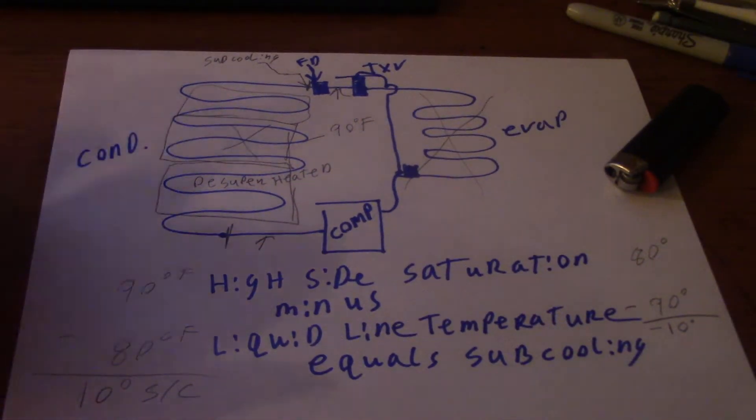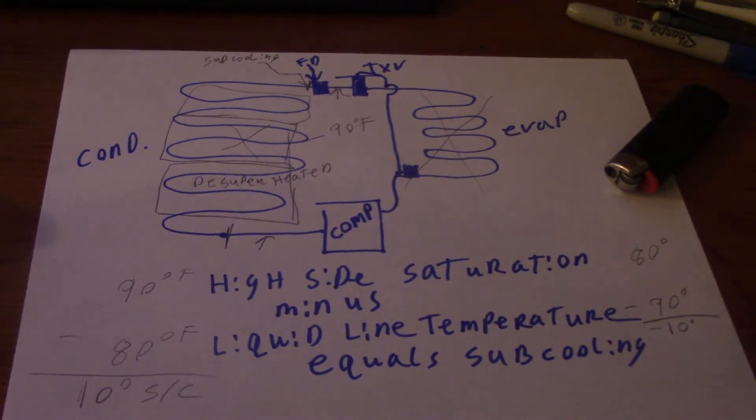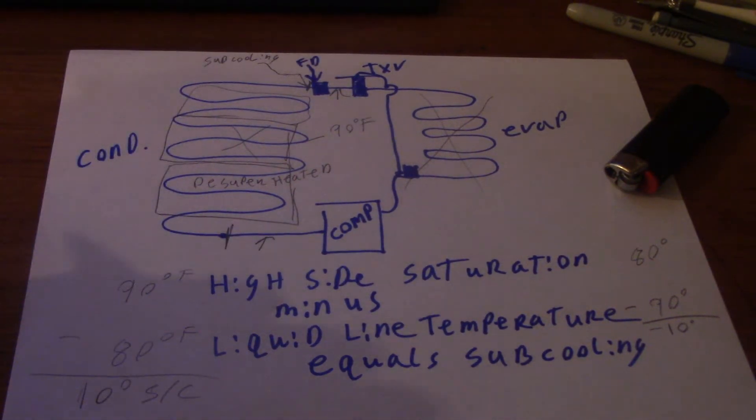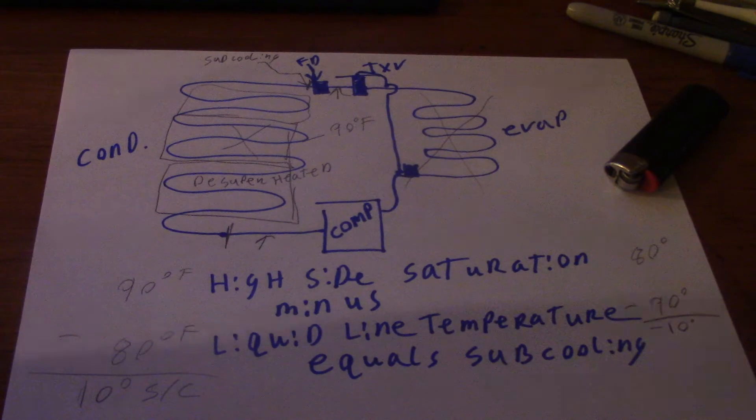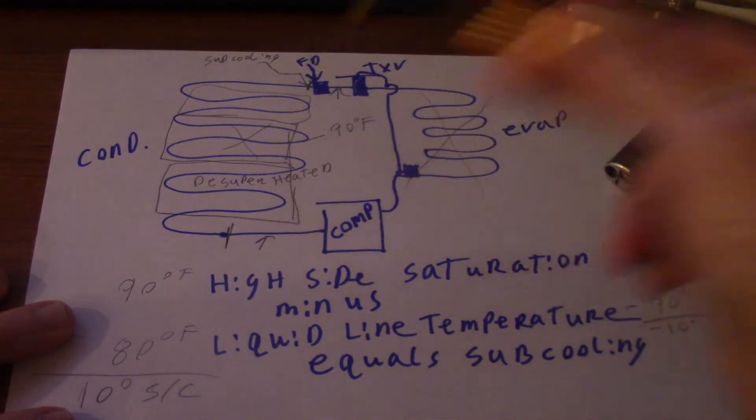For TXV, you charge the system by subcooling. You can't charge it by superheat because a TXV maintains superheat, so you have to charge by subcooling. Your fixed orifice metering devices, you charge by superheat, but you still check the subcooling, so you know what's going on on both sides of the system.